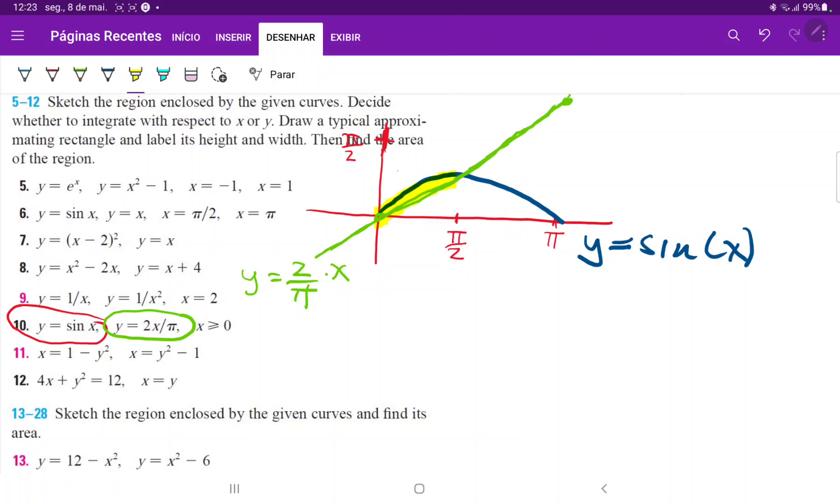So we should ask ourselves whether we want to integrate it with respect to x or y. It's always useful, since these functions are already expressed as a function of x. It's useful to see if we can integrate it easily with respect to x. And to see that, we just need to draw the rectangle that represents the area. Because the integral, it's just summing up these rectangles that are infinitely thin.